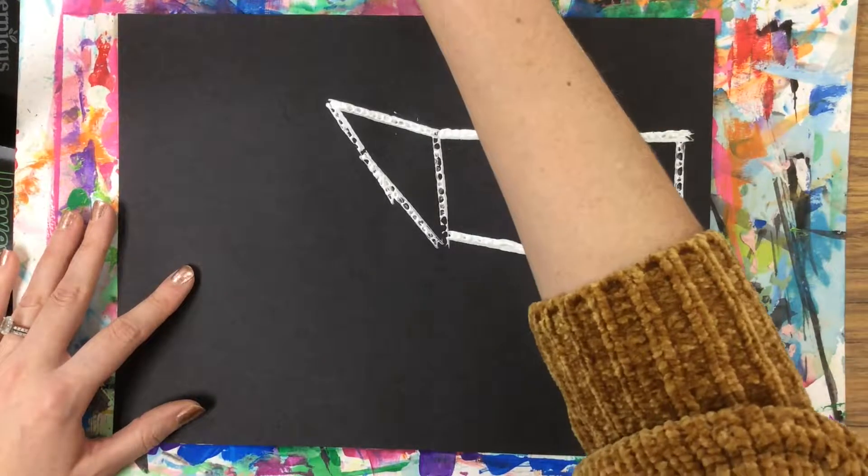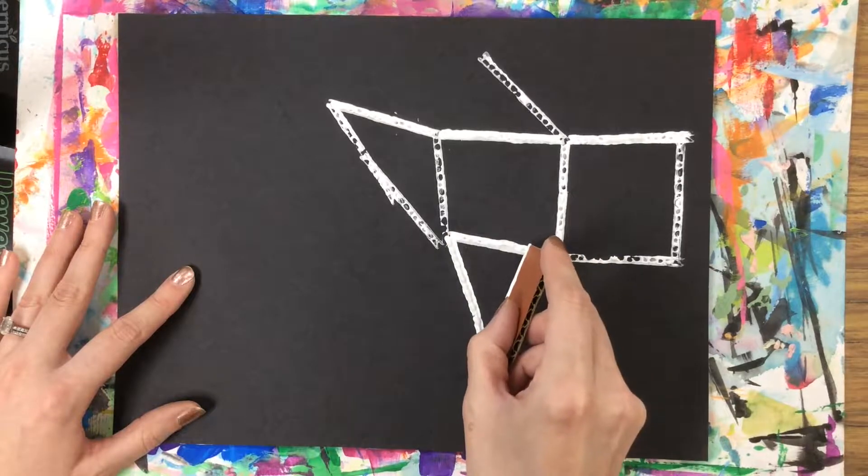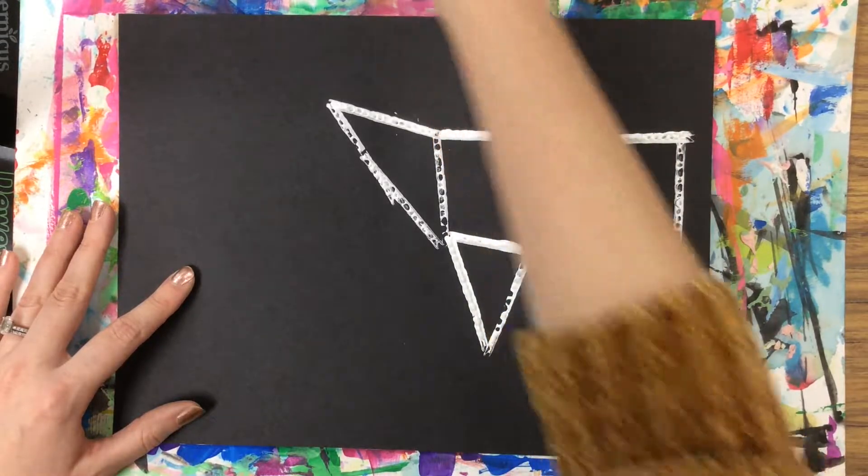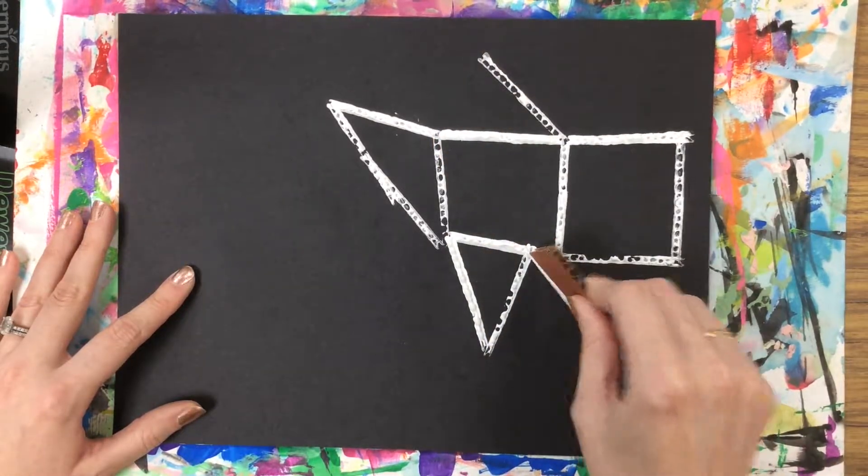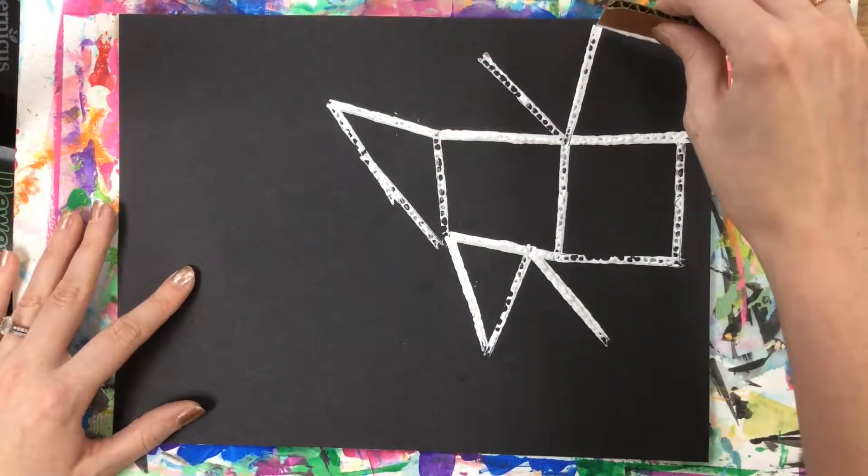And it's okay if they aren't perfect shapes, and you can create your own shapes, too. And you're just going to keep printing your lines until you fill your paper with different lines and shapes.